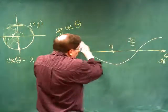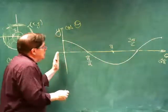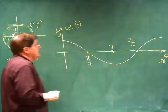And that's one cycle. So, again, the period of the cosine is 2 pi.